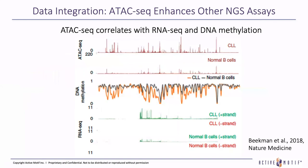Here's another example of ATAC-seq data integration. ATAC-seq data is correlating with both RNA-seq and DNA methylation data. These authors show that apparently open chromatin in CLL — the top trace — is also accompanied by a loss of DNA methylation, shown in the orange trace. The lower the orange bar goes, the less DNA methylation is at that locus. At the same place, there is apparently expressed RNA as measured by RNA-seq. By integrating data from all three of these assays, we can see a more complete picture of what is happening at each locus in the disease state.